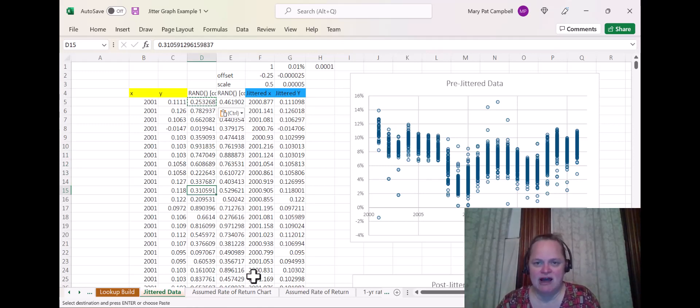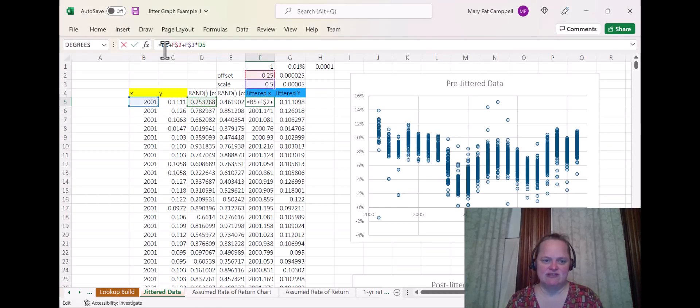Now, you don't want to apply these jitter factors. First off, it goes from zero to one. And we want this centered around the fiscal year. So we kind of want it to go from negative a half to positive of half, and maybe not that much. So that's why I have this offset and scale. And so you'll see I have a formula here. So I take my original x, so that's B5. I'm going to add the offset. So that's the minus 0.25, so minus a quarter, plus the scale times that RAND. So I'm going to scale down that random number generator so that it scales to a certain amount.